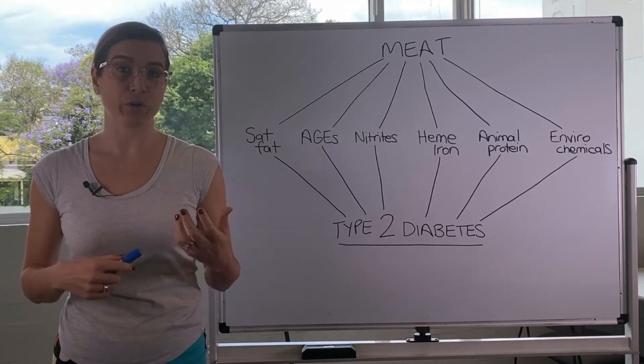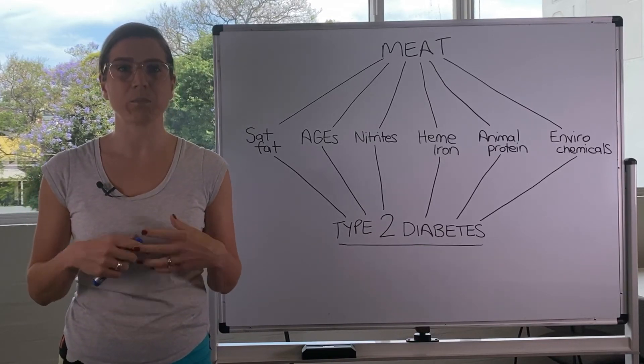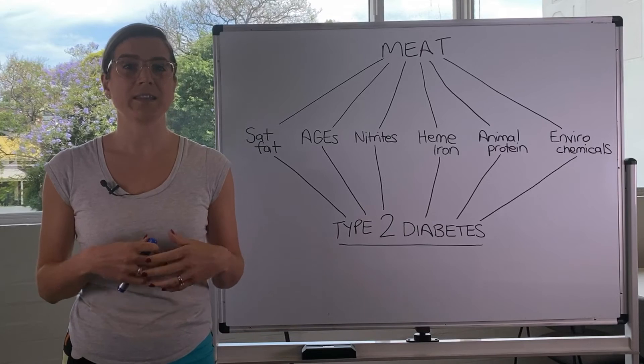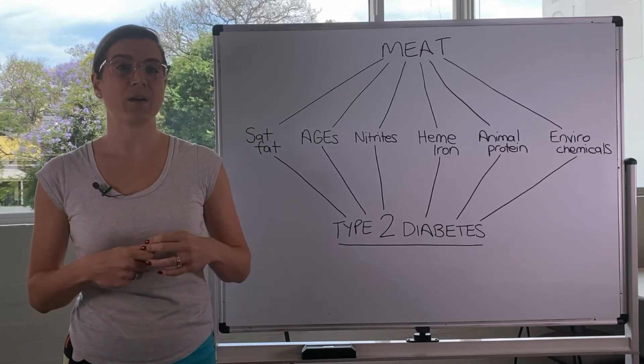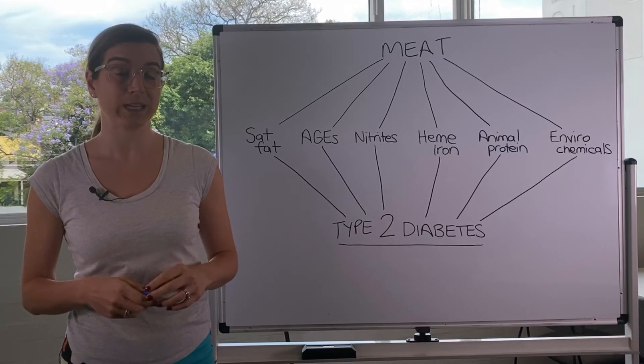So isoflavones are a phytonutrient. A phytonutrient is basically a plant nutrient. And this is thought to be what contributes or what really plays a role in improving insulin sensitivity.